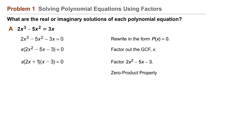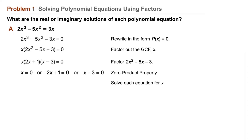So now our equation takes on the form x times the binomial 2x plus 1 times the binomial x minus 3 equals zero. Then we'll use the zero product property and find that x equals zero, or 2x plus 1 equals zero, or x minus 3 equals zero. In the equation 2x plus 1 equals zero, x must equal negative one-half, and in the equation x minus 3 equals zero, x equals 3.